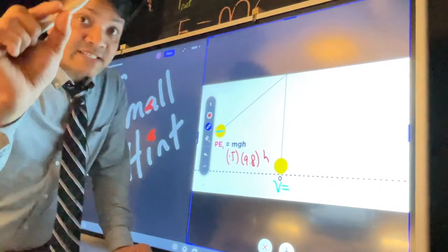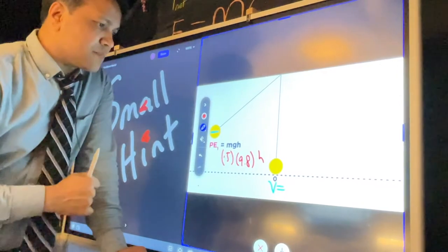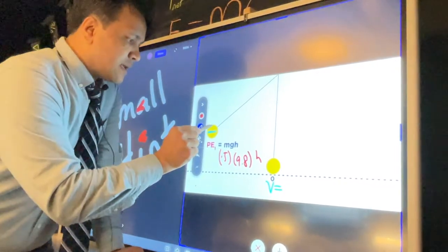You have m which is 0.5, you have g which is 9.8. Well, you don't have h, but you have to understand what h is. Okay, let me explain what h is.